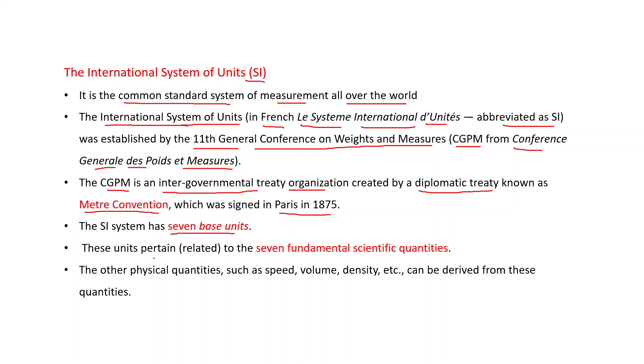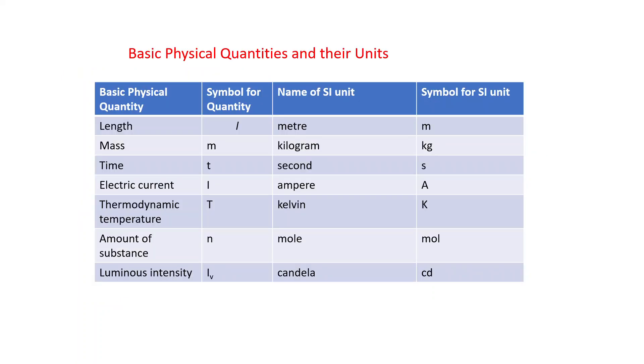The SI system has seven base units, and these units pertain to the seven fundamental scientific quantities. Other physical quantities, such as speed, volume, density, can be derived from these seven base quantities. These are the seven basic physical quantities and their units. Like length, that is small l, its SI unit is meter, symbol is small m.